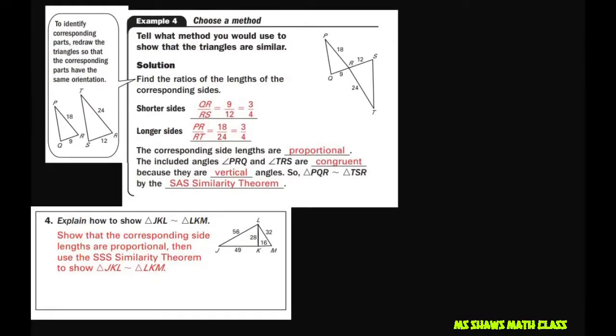Here's an example. If we want to use a method to show that the triangles are similar, we could find the ratios of the lengths of the corresponding sides by looking at the shorter sides and then the longer sides. And then the corresponding side lengths are going to be proportional. The included angles here are also congruent because of the vertical angles theorem. So the triangles are similar based off Angle-Side-Angle, that means they're similar.